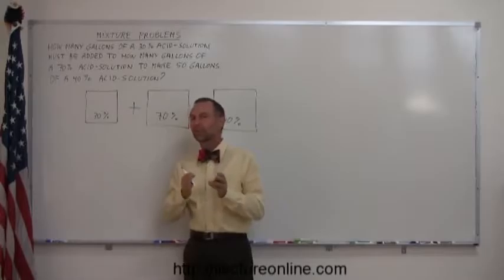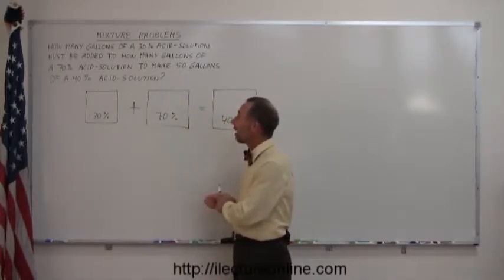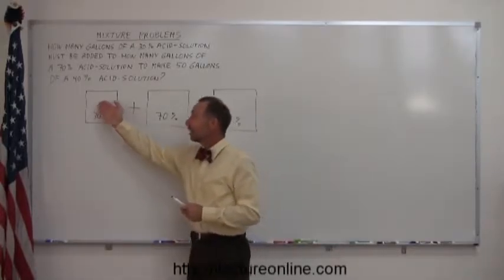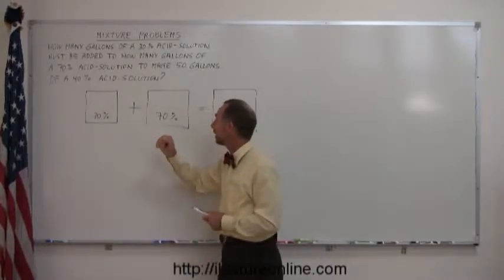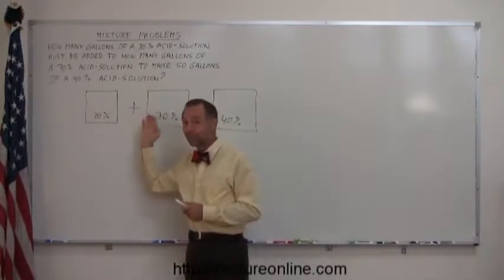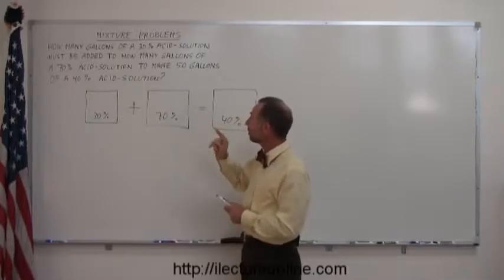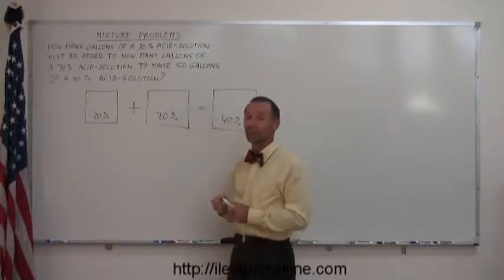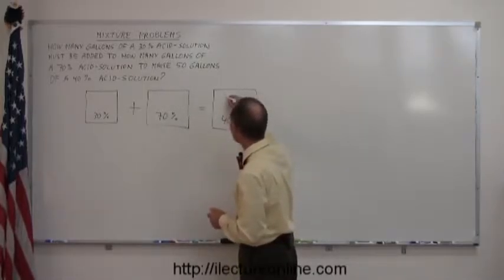Also, in these boxes, we want to put in there how much of each that we have. Now, it doesn't tell you how much you use of this solution and it doesn't tell you how much you use of this solution. Matter of fact, that's what you're supposed to figure out. But it does tell you that you have 50 gallons of this solution. Alright, so we put 50 gallons over here.